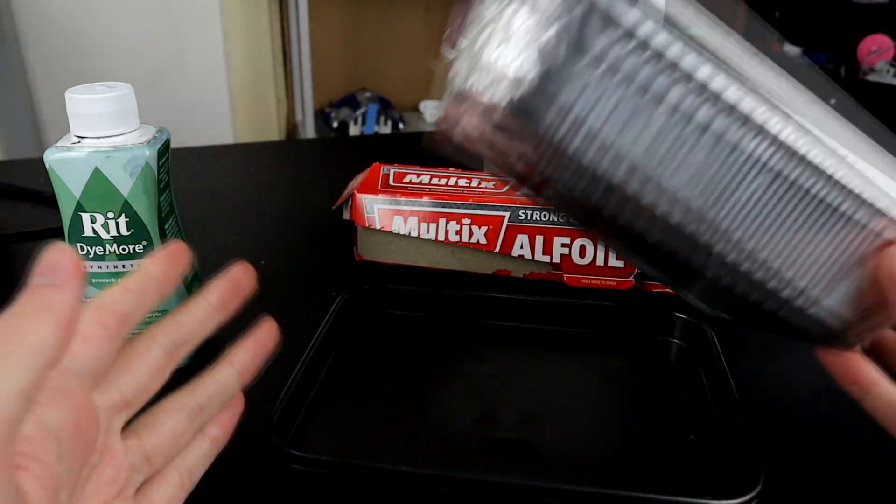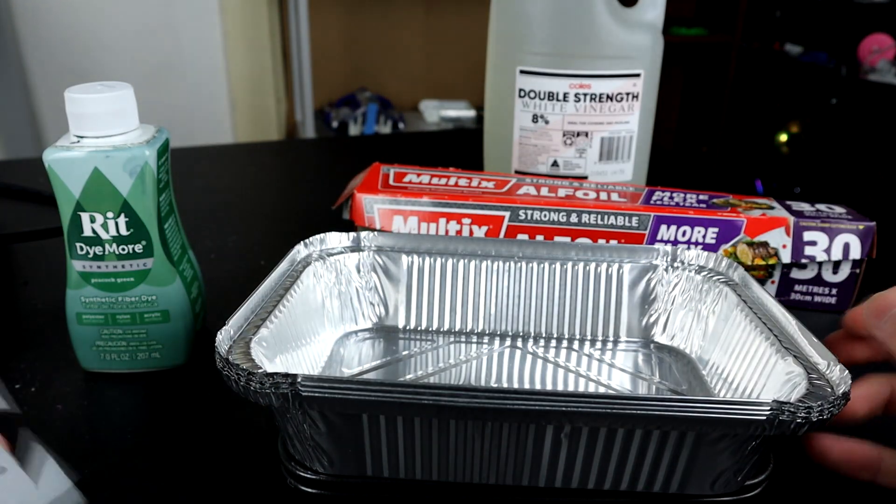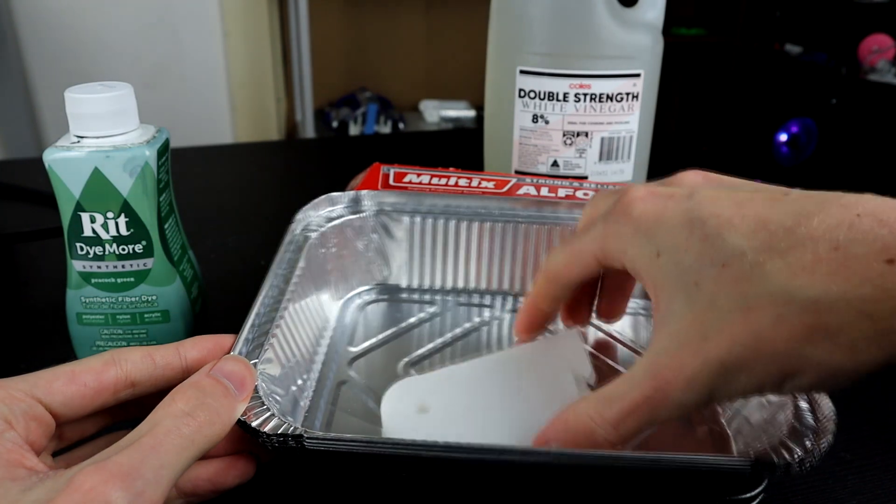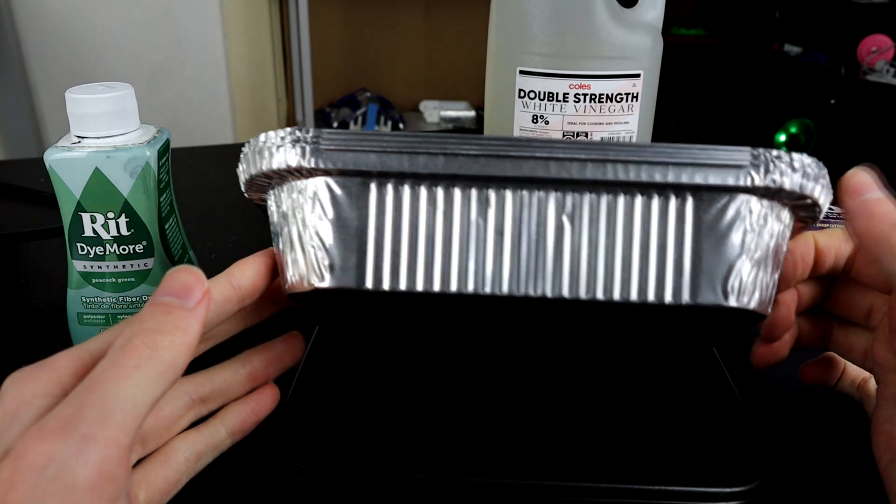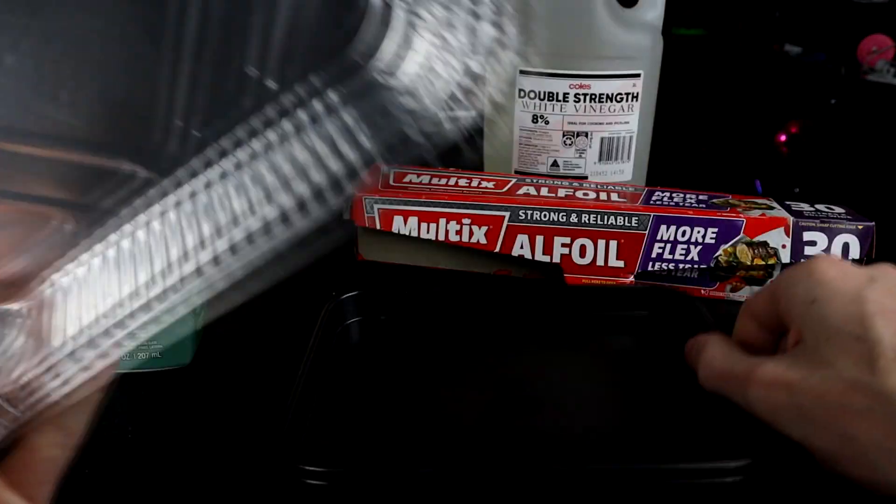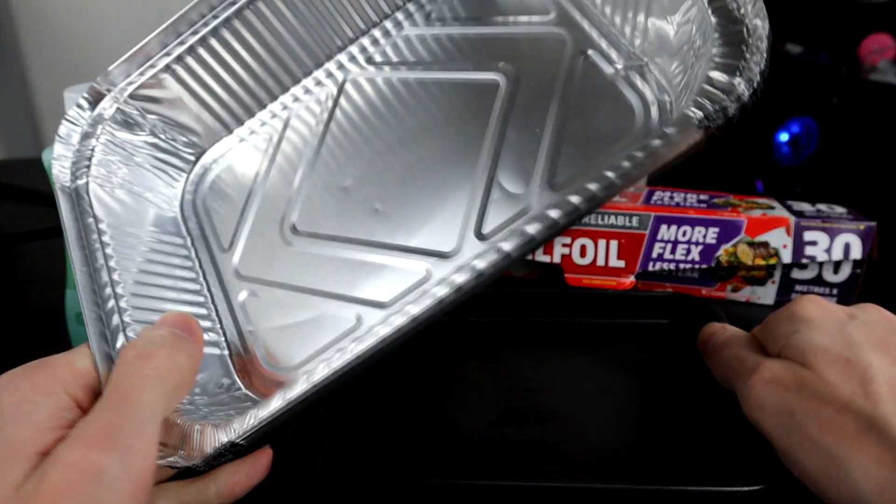And finally here we have the consumables and other bits and pieces. You need a vessel which is large enough to hold your plastic piece that is going to be dyed. In this case this is totally fine. Personally I use these aluminum trays, or have been up until this point. These have been a little bit flimsy, so I have a nice little baking tray that sits underneath them just to give them a little bit more rigidity.